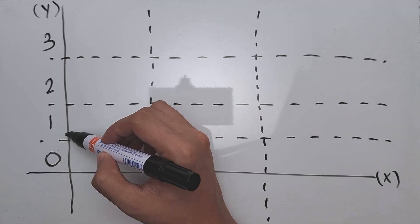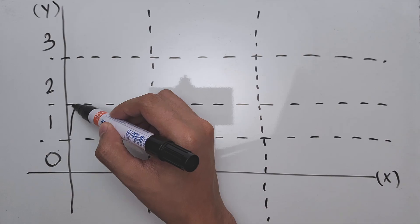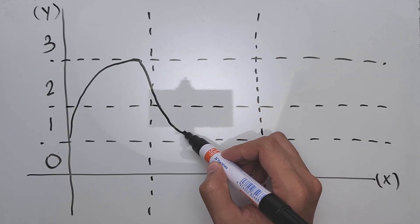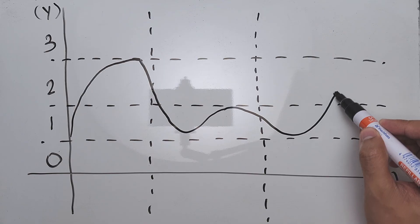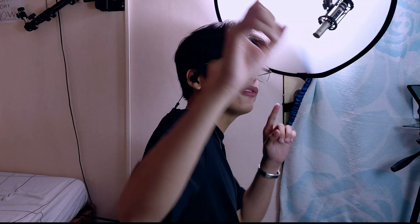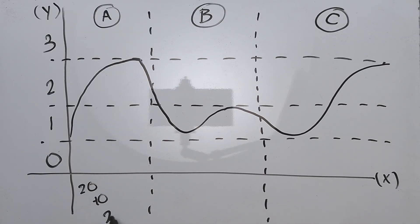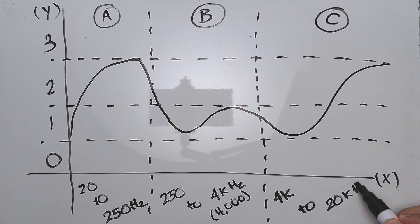Going back — let's say line A starts at 1 decibel, can go up to 3 decibels, and represents the 20 to 250 Hz range. Line B starts at 1 decibel, can go up to 2 decibels, and represents the 250 to 4k Hz range. Line C starts at 1 decibel, can go up to 2 decibels, and represents the 4k to 20k Hz range — creating three sections that go up and down relative to gain and frequency. These three sections represent our bass, mids, and trebles within the 20 to 20k Hz range, typically associated with the limits of human hearing.